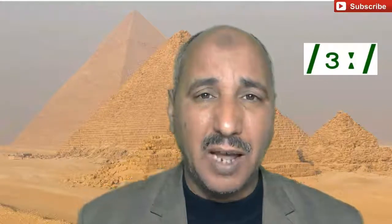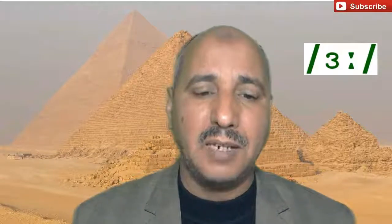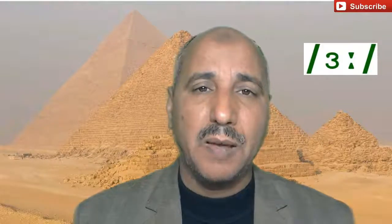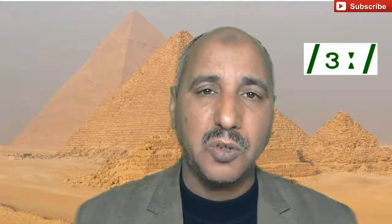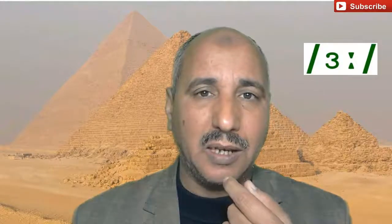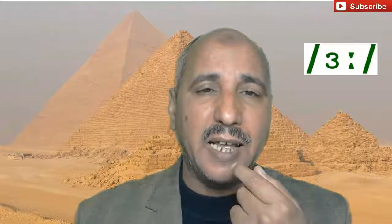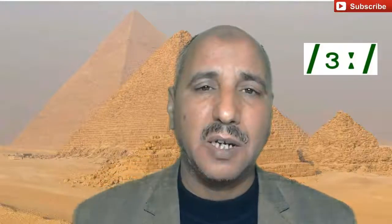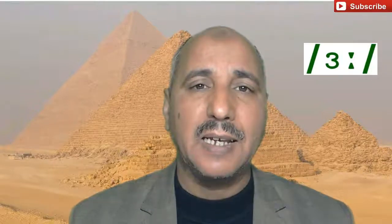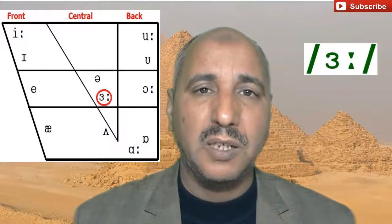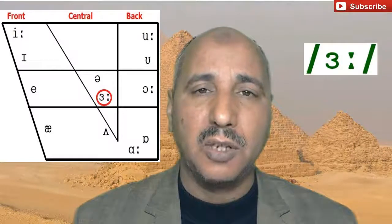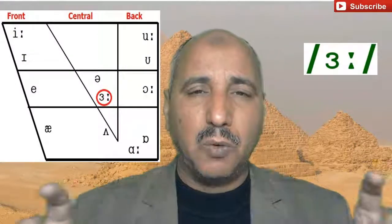In the center of the mouth, we can find light rounding, meaning small rounding. The technical name for this sound is open, mid, central, and rounded vowel. This sound is open, and in the middle, in the center of the tongue. If we look at the diagram that follows the mouth, we find that it is located in the center of the mouth.